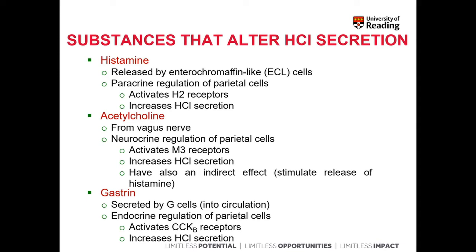Finally, we have gastrin, which is an endocrine hormone secreted by G cells into the blood circulation. Gastrin has a slower time of action because it acts by being secreted into the general blood circulation, and it regulates parietal cells by activating cholecystokinin B receptors, which in turn leads to an increase in the secretion of hydrochloric acid.